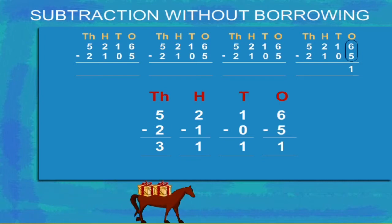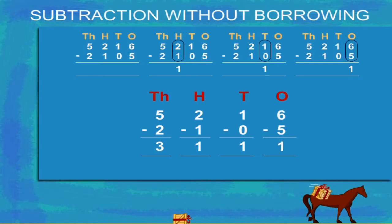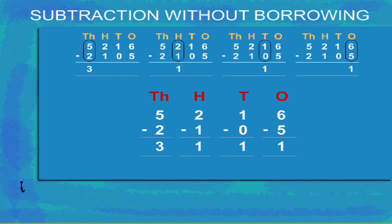So, 6 ones minus 5 ones is 1. 1 tens minus 0 is 1 ten. 2 hundreds minus 1 hundred is 1 hundred. And, 5 thousands minus 2 thousands is 3 thousands.